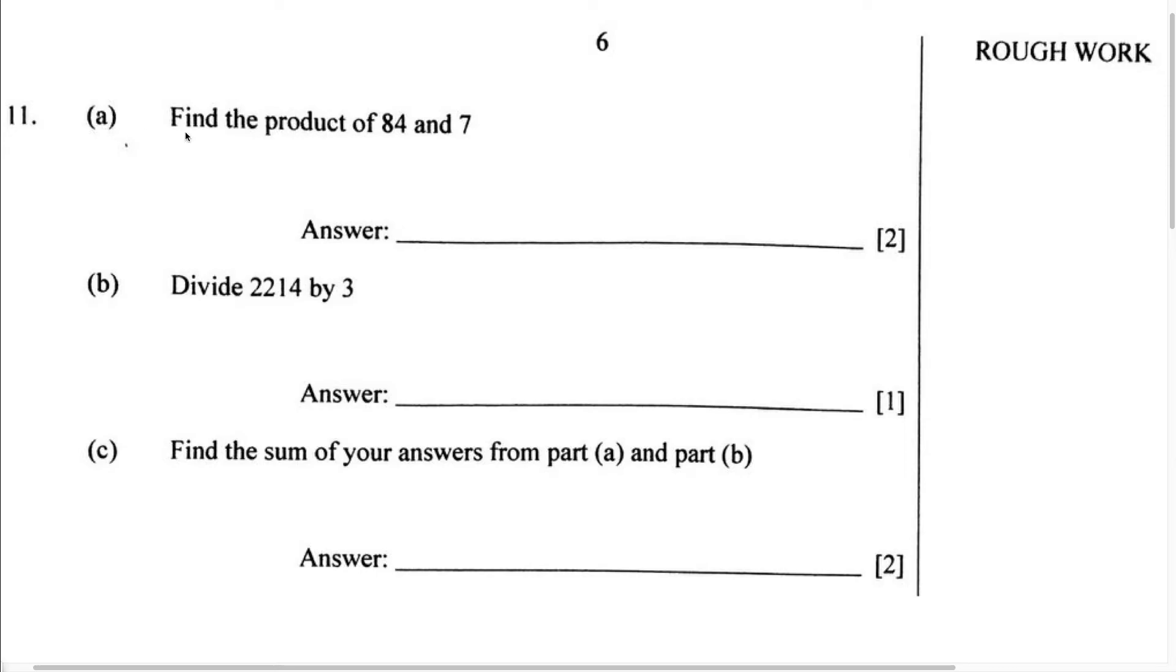Let's do this question. Part A says find the product of 84 and 7. Now we know there is a keyword in this sentence and that is going to be product. Now what is the product? Well, the product is the answer you're going to get when you multiply two numbers.